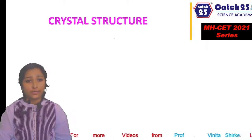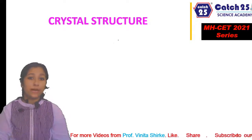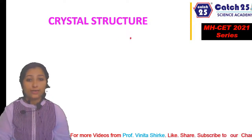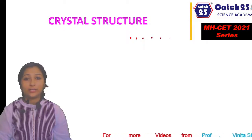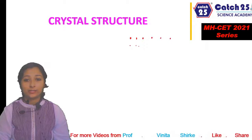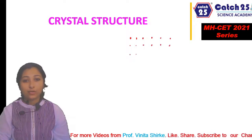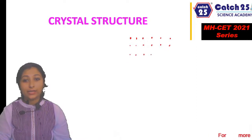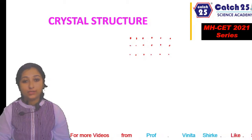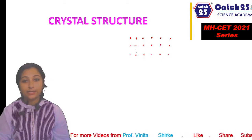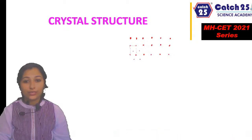Crystal structure kya hoota hai? Crystal structure consists of a number of atoms. Bohut sare atoms are present in three dimensions — they are present in three dimensions. And ye atoms ko join karke kya bantah hai? Unit cell bantah hai. When these atoms get joined by an imaginary line, we get to see a unit cell.